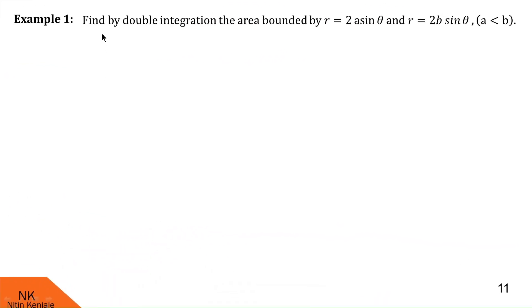In this first example, we are asked to find by double integration the area bounded by r = 2a sinθ and r = 2b sinθ, where a is less than b.